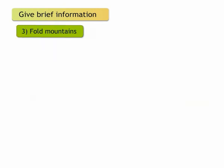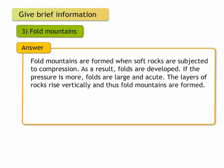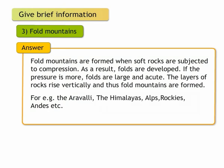3. Fold mountains. Fold mountains are formed when soft rocks are subjected to compression. As a result, folds are developed. If the pressure is more, folds are large and acute. The layers of rocks rise vertically and thus fold mountains are formed. For example, the Aravalli, the Himalayas, Alps, Rockies, Andes, etc.